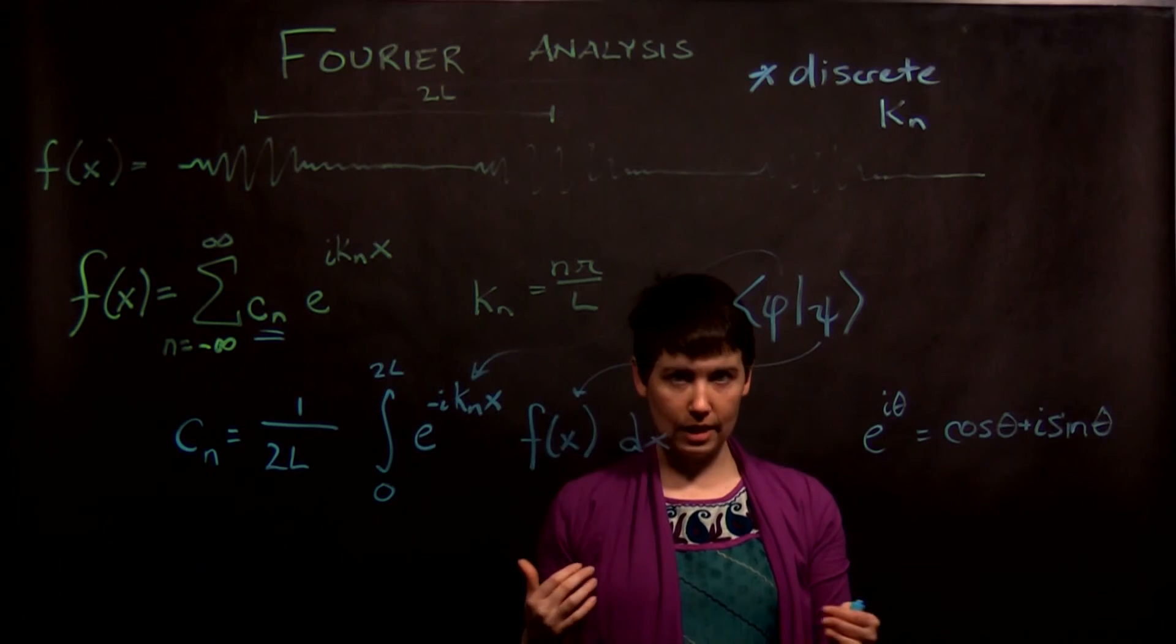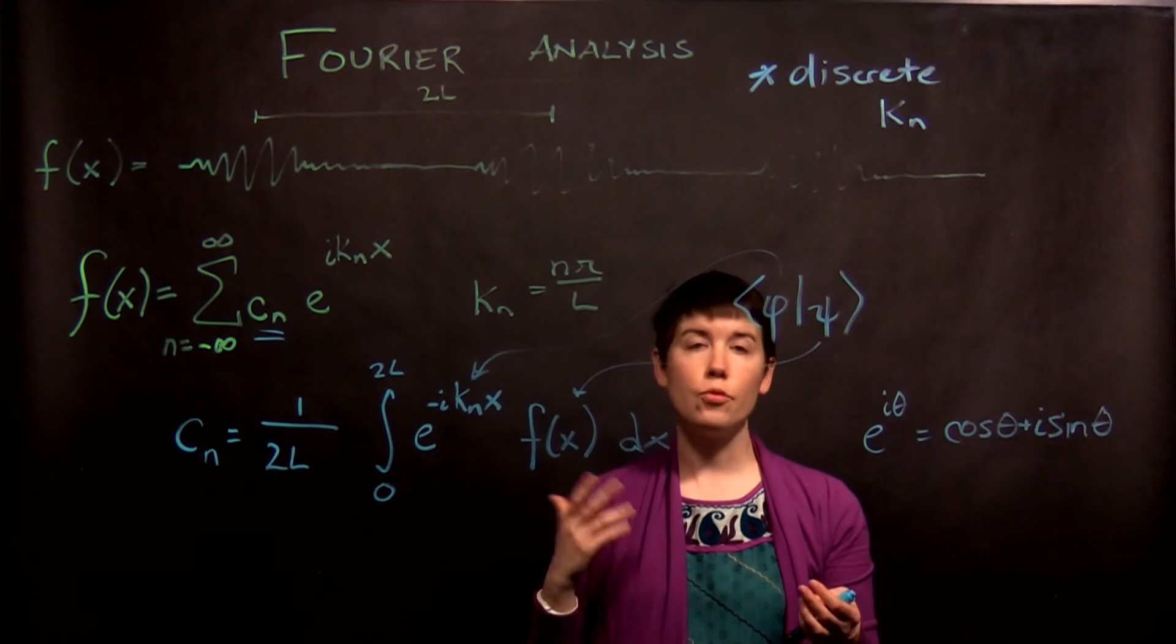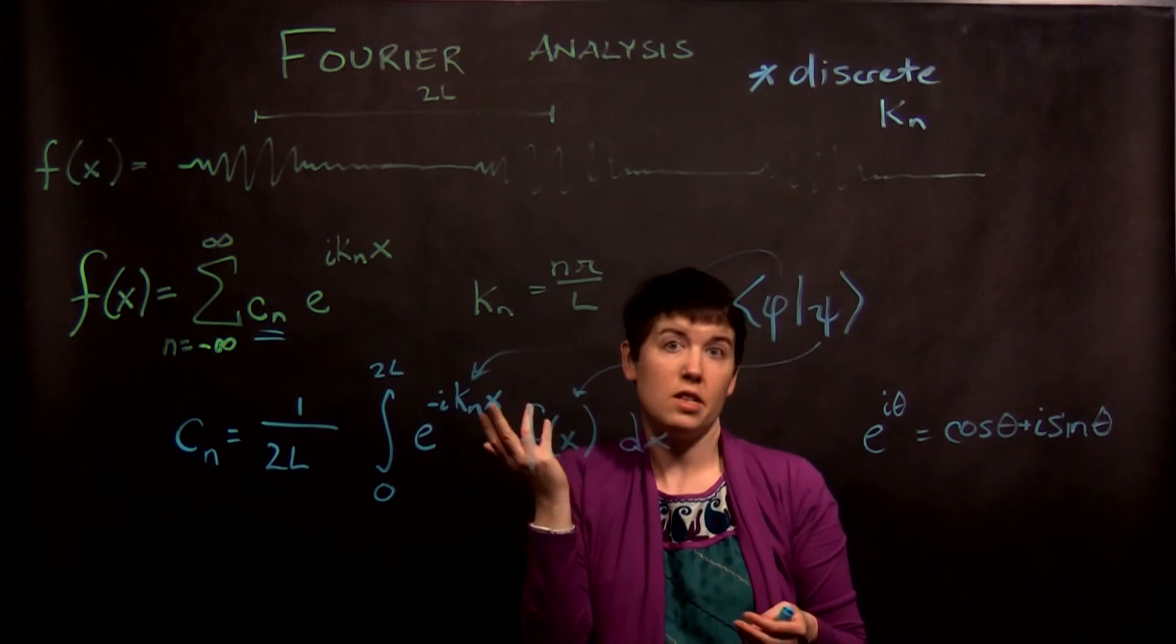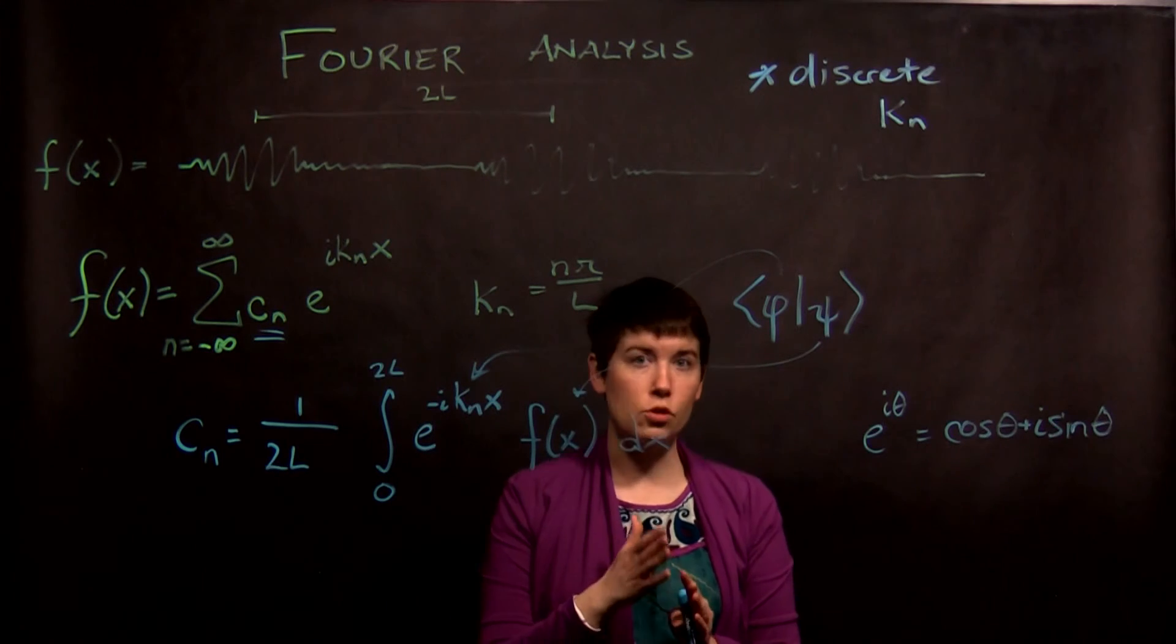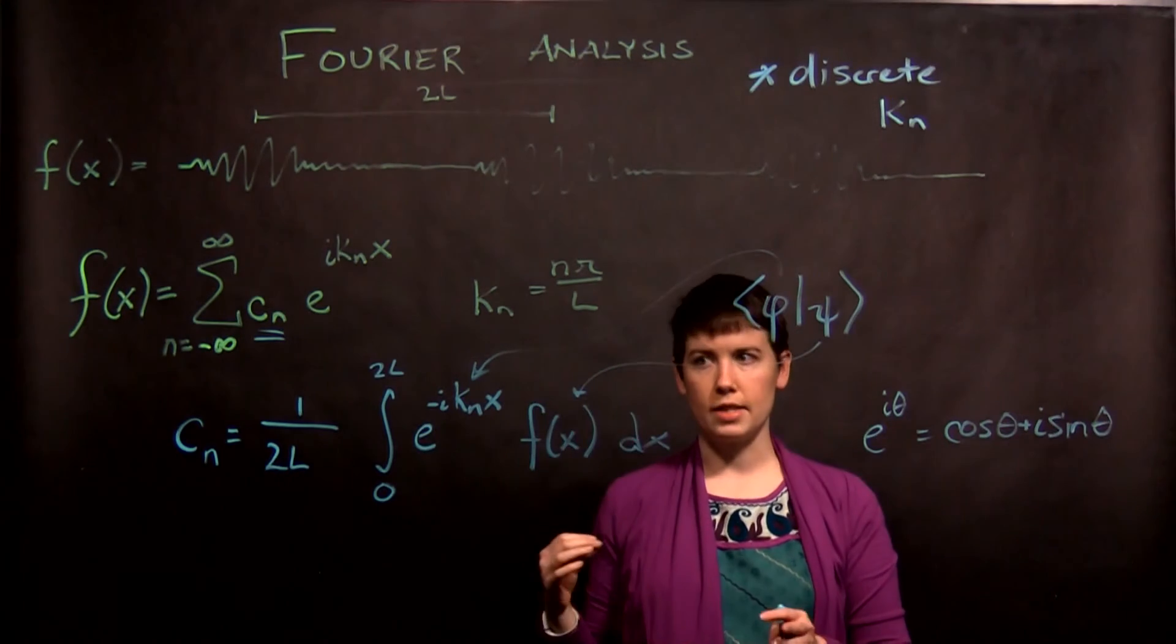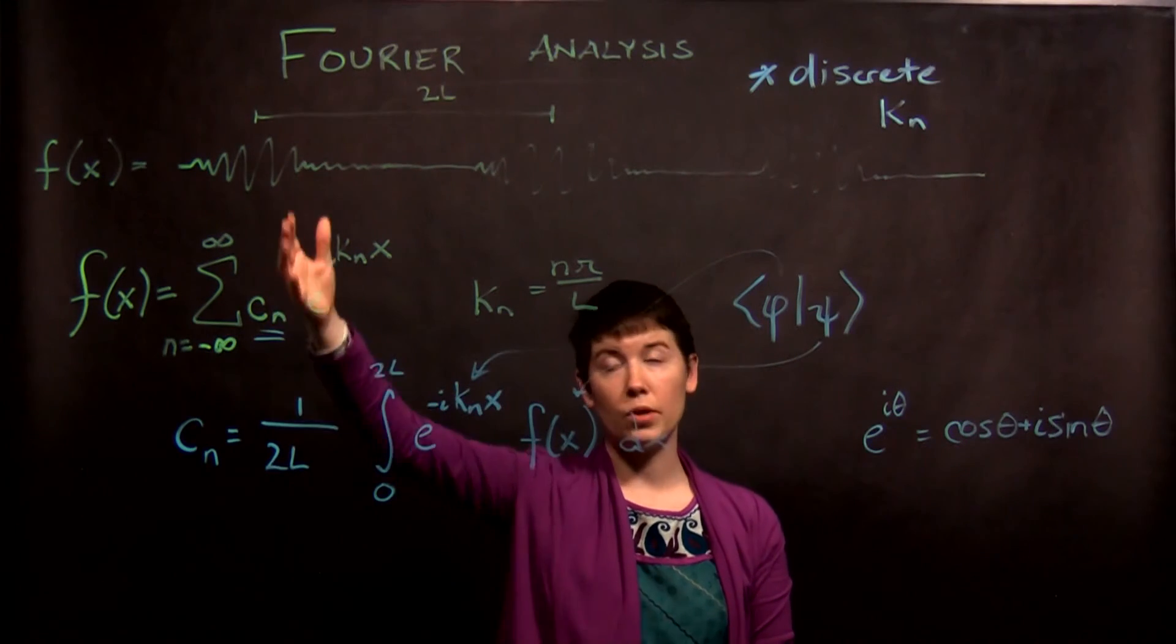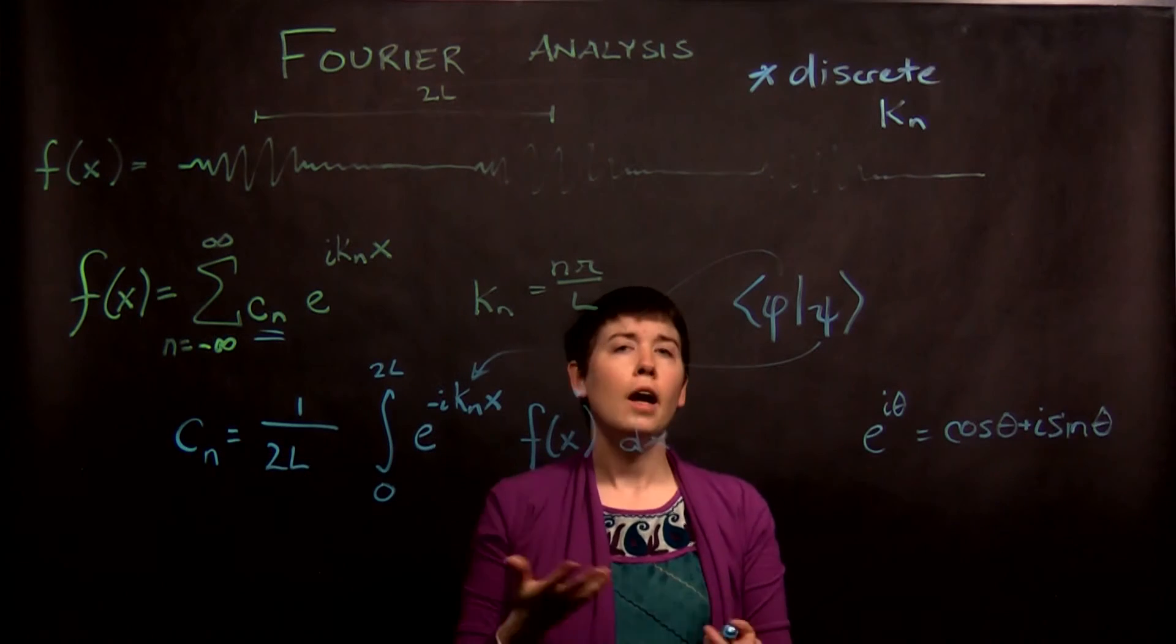And we get a continuous distribution. So this changes slightly as we move to a continuous distribution. And really what that's coming from is the fact that L is kind of going to infinity at that point. So look for that in the next video. But make sure that you're keeping track now of when n starts at one.